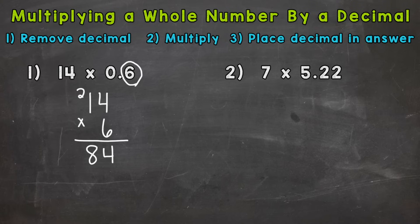That way I make sure I include everything. So we have one digit behind a decimal. That means our answer has to have one digit behind the decimal. So this 4 will be our one digit and we can place our decimal right there. So we have 8 and 4 tenths as our answer.